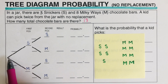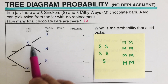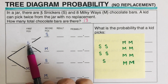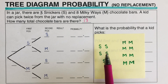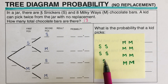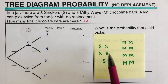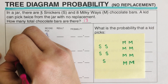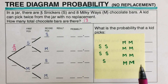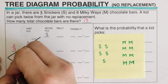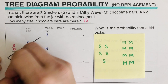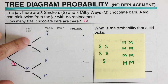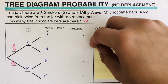The blanks on the branches are the probabilities. The probability that a kid picks a Snickers on the first pick is five over thirteen. The probability of picking a Milky Way on the first pick is eight over thirteen.